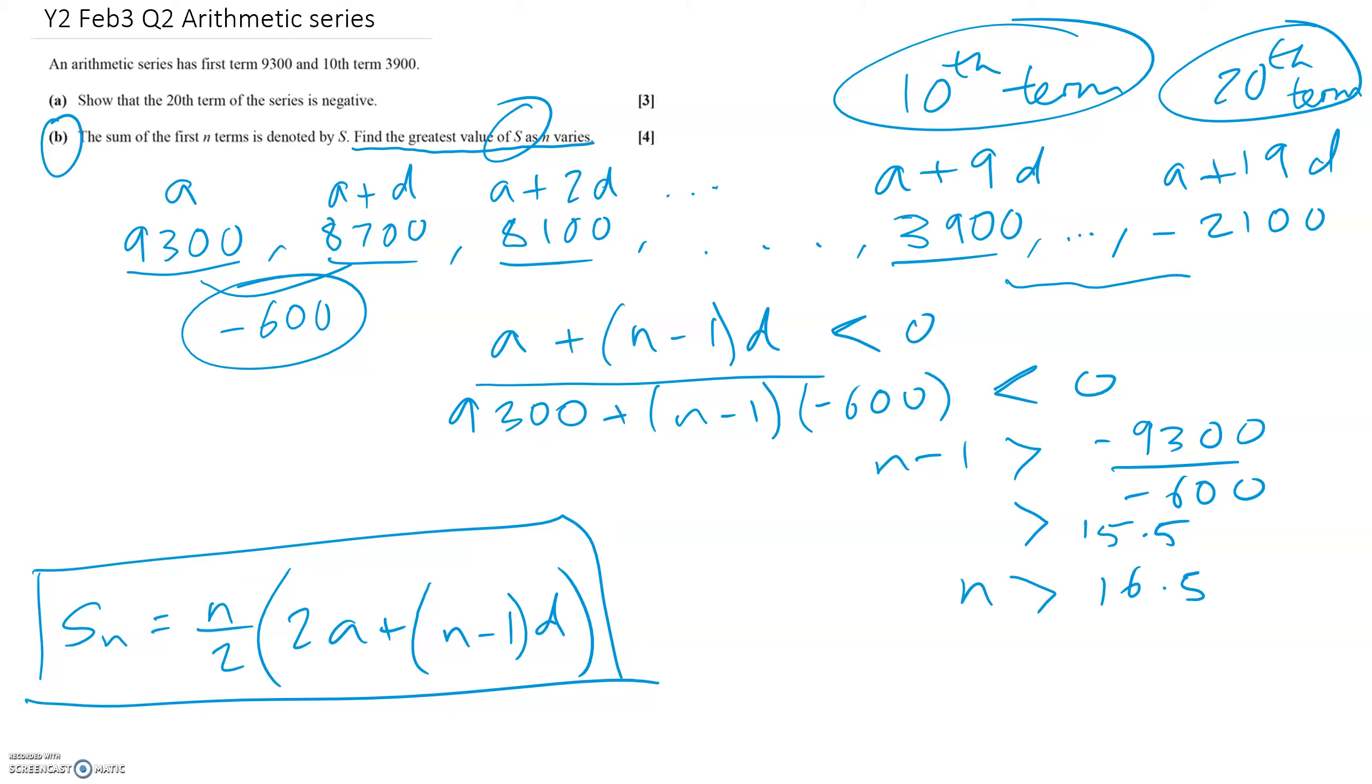So the 16th term is positive. Let's write that down: 16th term is positive. And the 17th term would be negative. And you could always check that yourself by just substituting into this formula here.